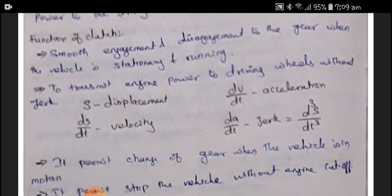Let me discuss about four or five terms: displacement, velocity, acceleration, and jerk. S is the displacement. Velocity is the change in displacement with respect to time — that is ds/dt. Acceleration is change in velocity with respect to time — dv/dt. Whereas jerk is the change in acceleration with respect to time, or d³s/dt³.